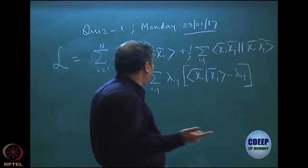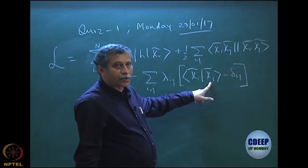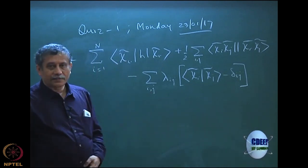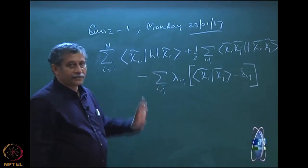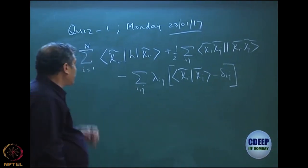Here actually it is not one condition because i and j are in total n square in number. For each ij, I have one lambda ij. That is why it is a matrix. This is actually a matrix, I can write it as a matrix, it is n square in number.